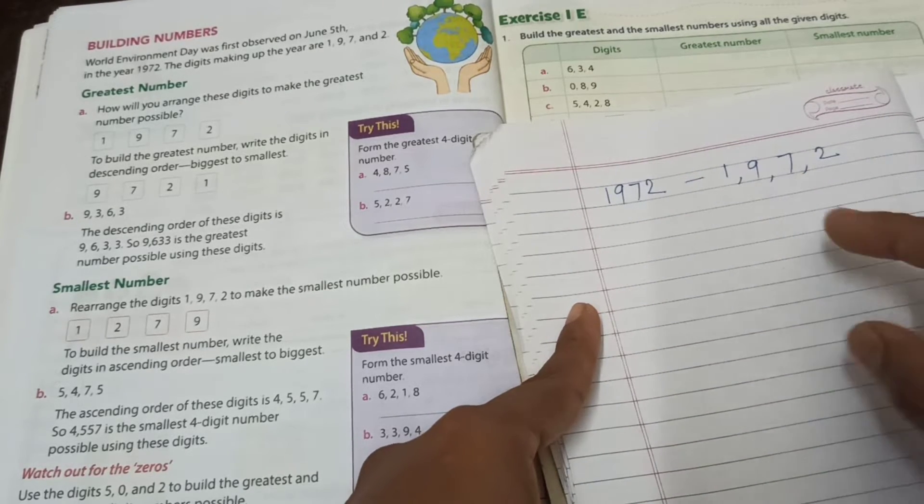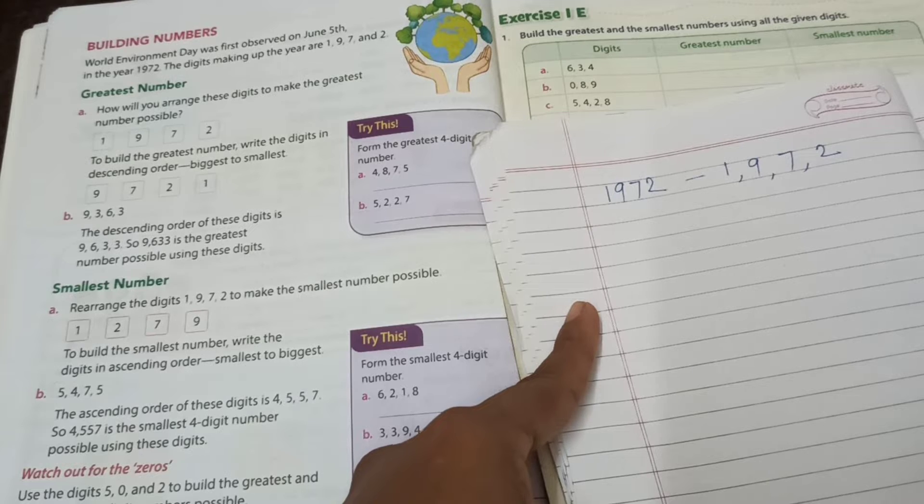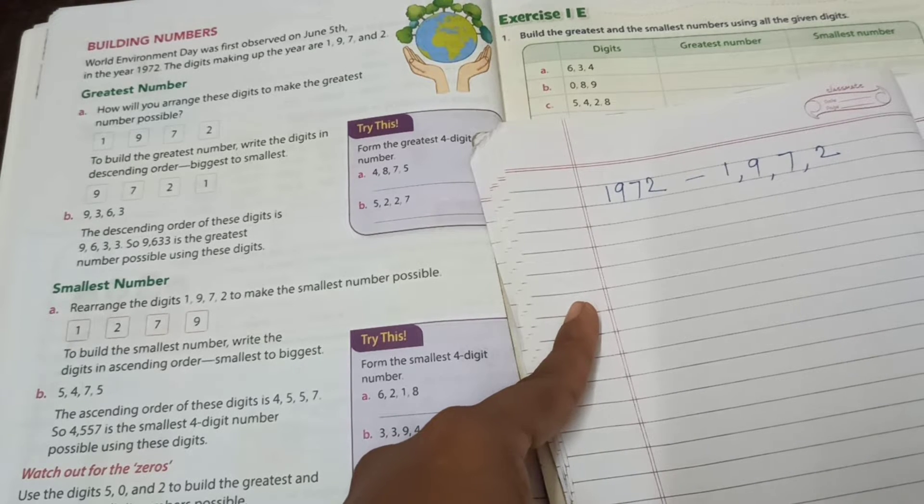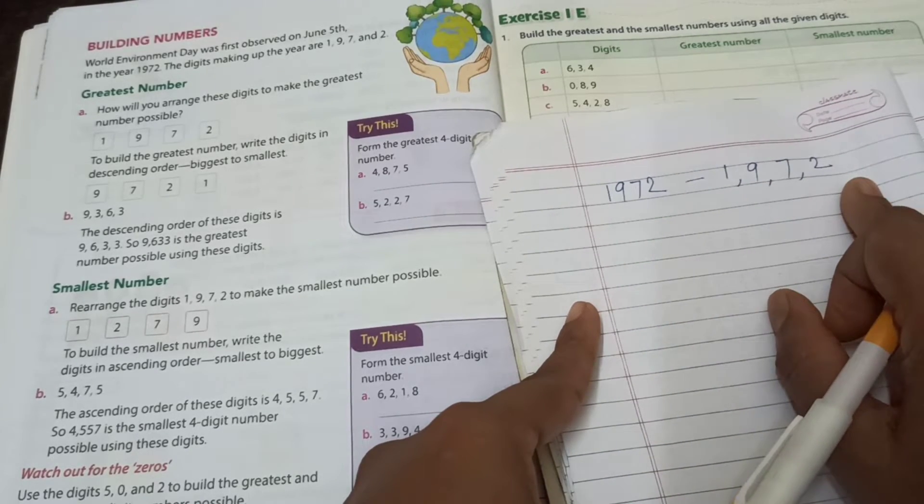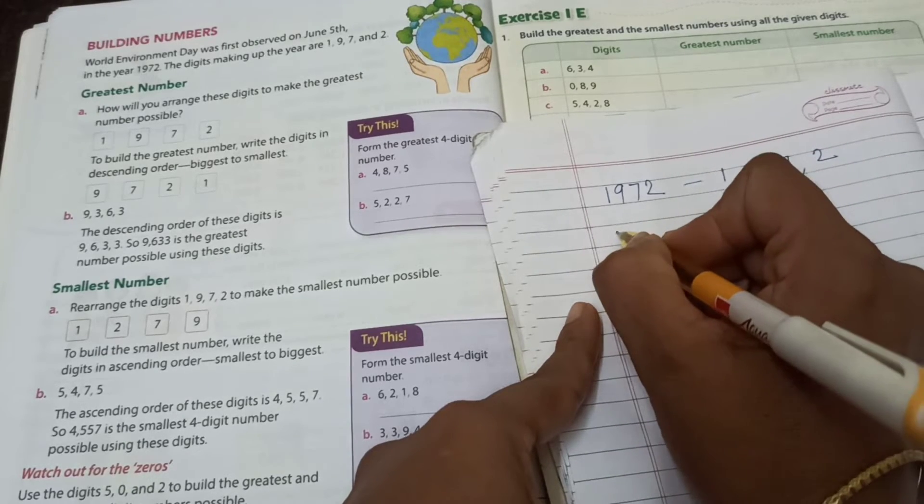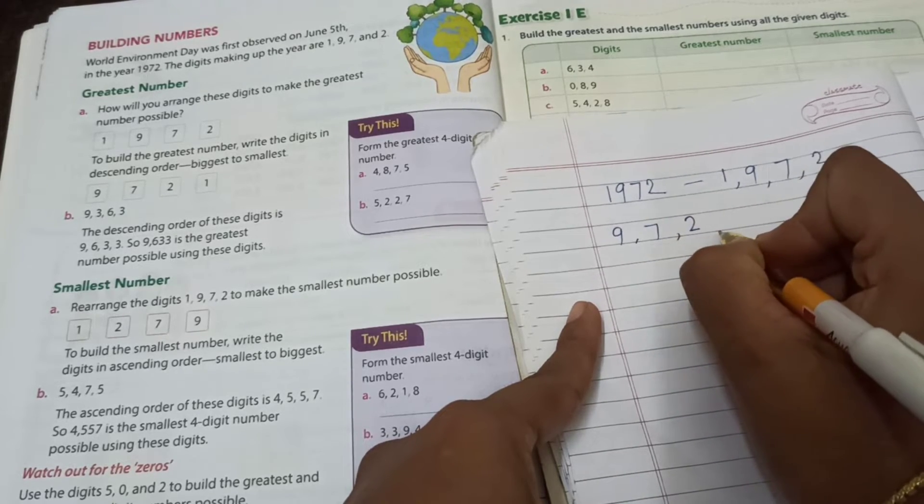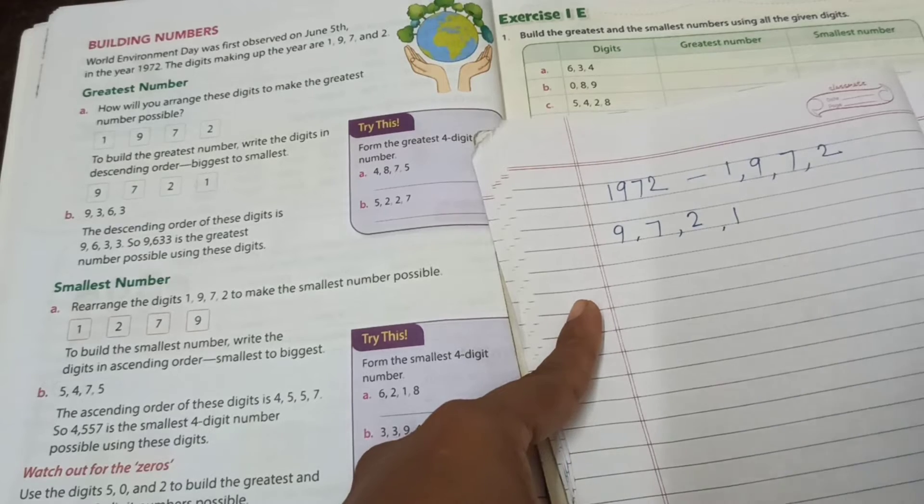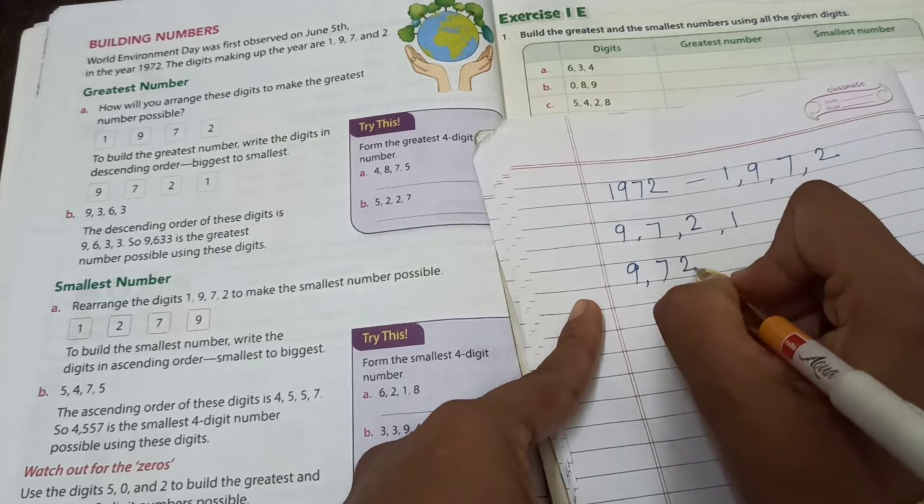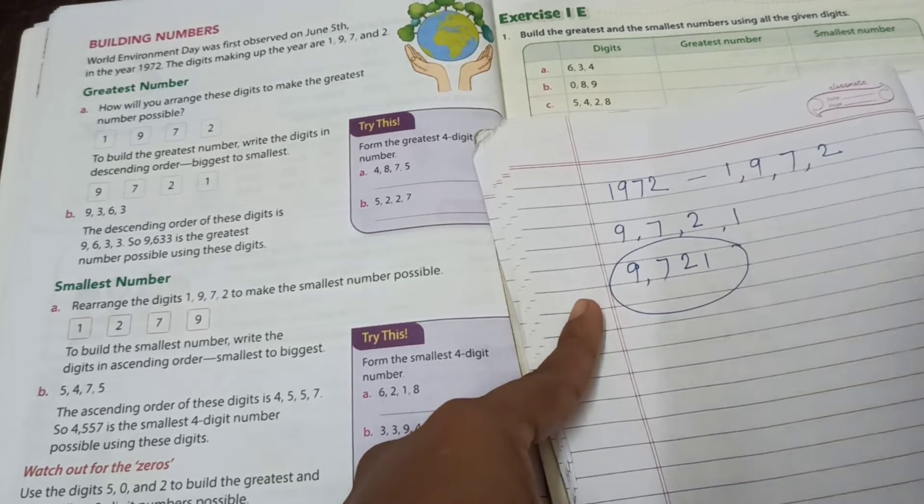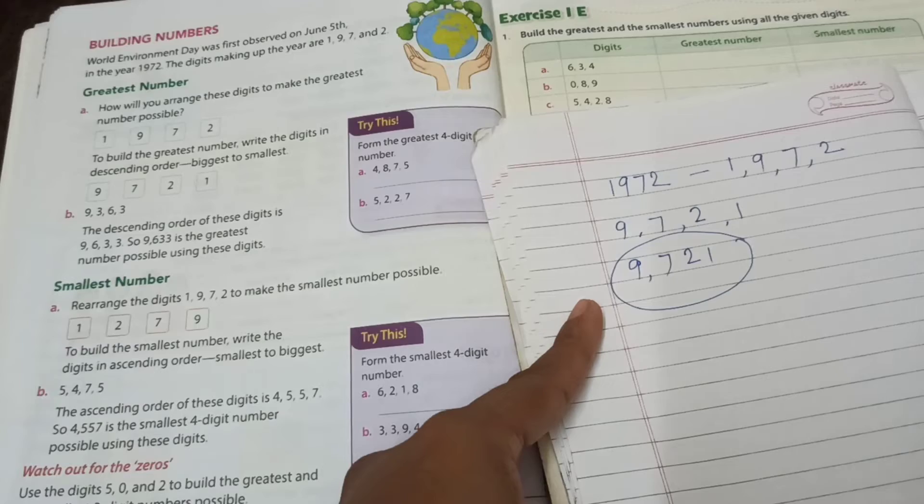How we make this one number greatest number? All you know? Descending order? Biggest to smallest. Then start. Which is the biggest number? 9. Then 7, then 2, then 1. Means 9721. This one a biggest number, greatest number. Very good.